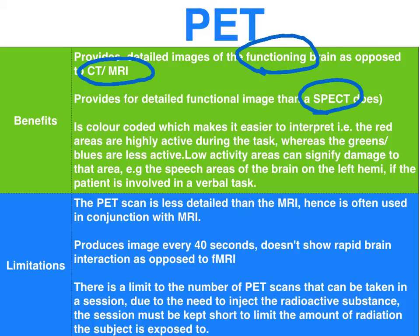In terms of limitations, the PET is less detailed than an MRI and an fMRI, so it's often used in conjunction with an MRI when pinpointing structural abnormalities. It produces an image only once every 40 seconds, so it doesn't show rapid brain interaction as opposed to an fMRI. Because of the radioactive substance, there is a limit to the number of PET scans one can have, and the radioactive tracer is metabolized by the body rather quickly, so sessions tend to be short in comparison to a SPECT.